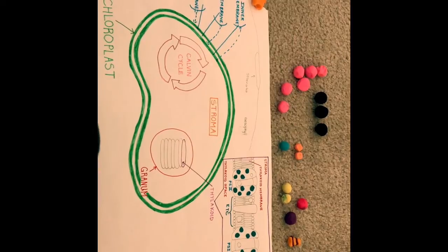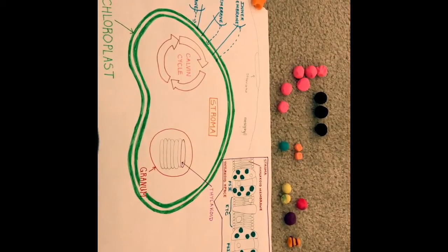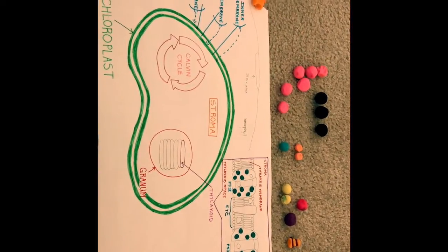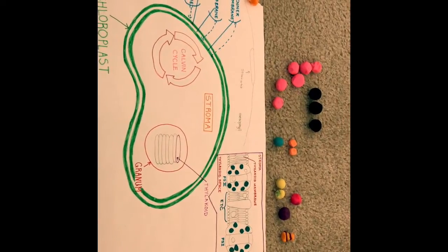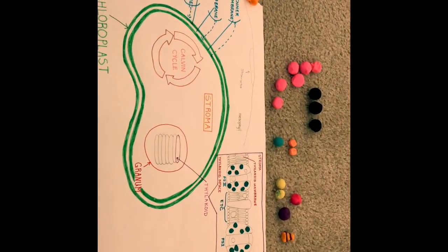Some organisms are autotrophs, which means that they're self-feeders and sustain themselves by converting light energy, sunlight in this case, into chemical energy by a process called photosynthesis.